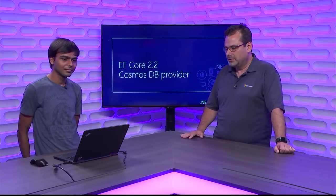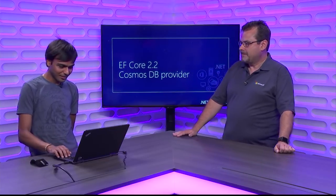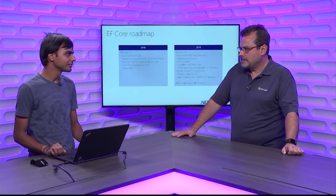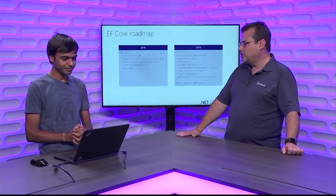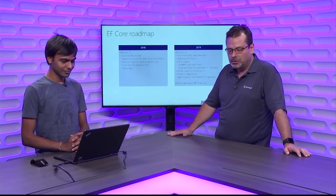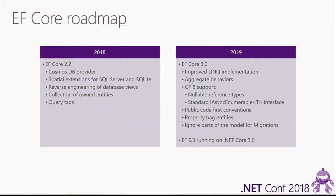Welcome to talk about that with us. Next we have our roadmap. We are planning to ship EF Core 2.2 by the end of this year. It's going to contain all the features we talked about today, plus another small feature about the ability to reverse engineer a database view using query types, which were introduced in EF Core 2.1 — essentially an entity object without a key that is read-only.